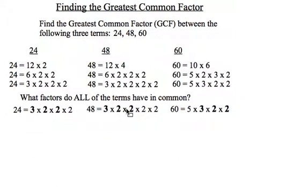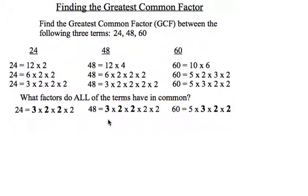Well, there we go. 24, 48, and 60 all have a 3 times 2 times 2 in common. I can't have anything extra because a 5 is not available in 48 and 24. An extra 2 is available in 48, but not in 60. So these are the three numbers or building blocks that all three of them have in common.